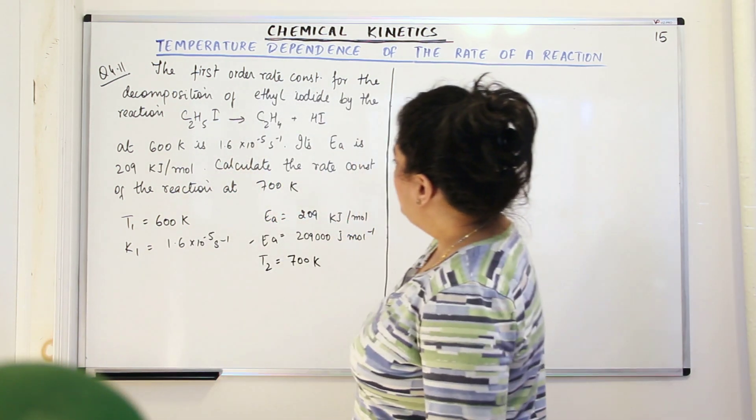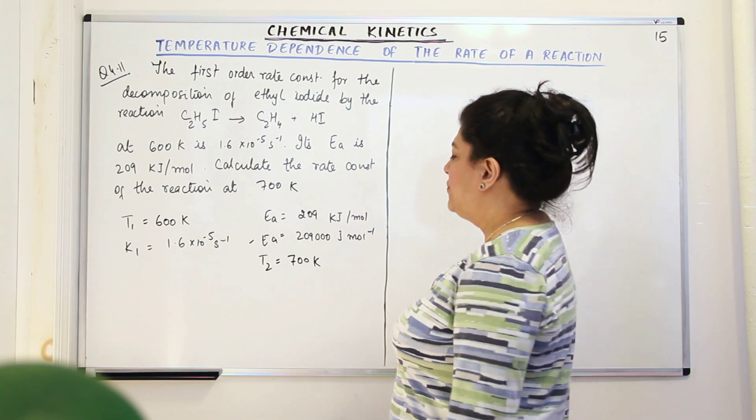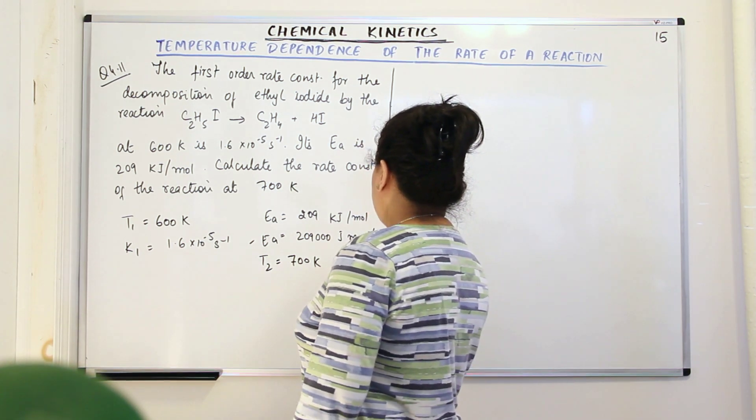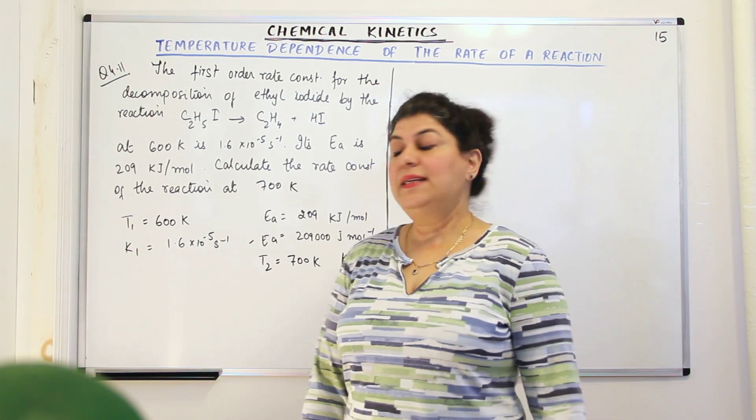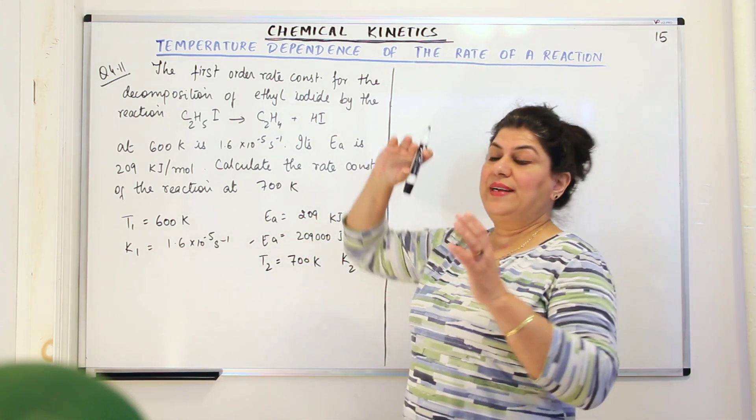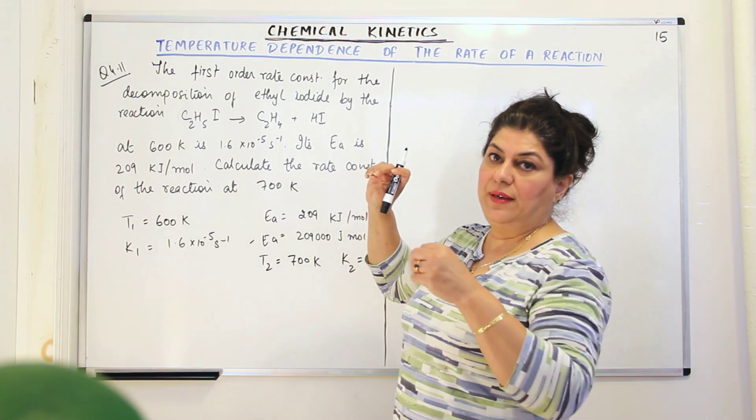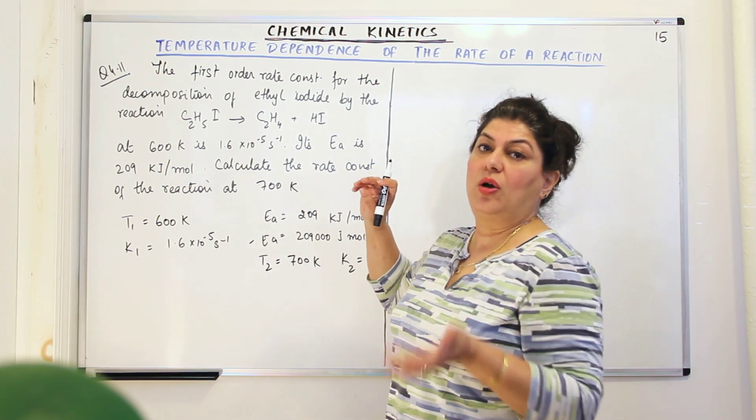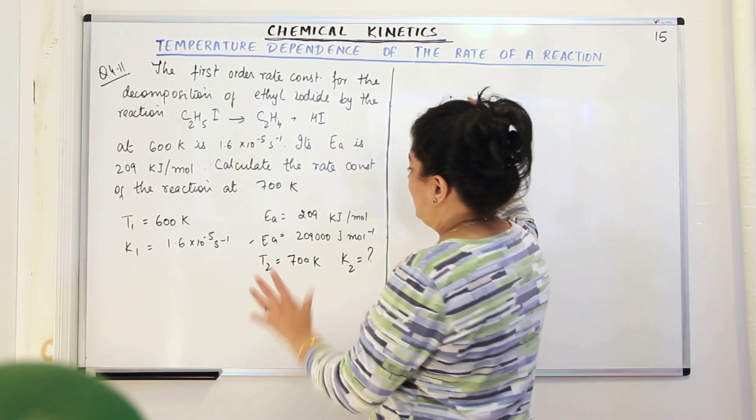So now you have to calculate the rate constant of the reaction at 700 Kelvin, which means K2 is asked. So let us write the equation once again. And now instead of writing log K2 upon K1, log K2 upon K1 means nothing but log K2 minus log K1. So let us write it in that form.